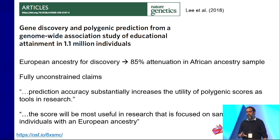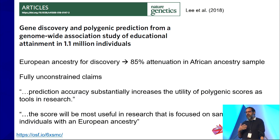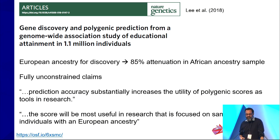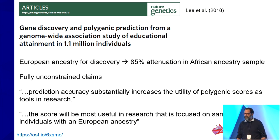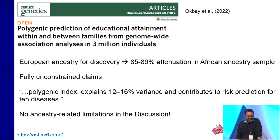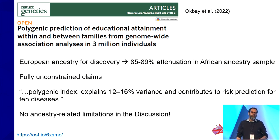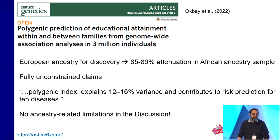Despite evidence in the paper that this was not a universal finding, they nevertheless held to universal claims. The question was: in the fourth iteration, did they change how they made their claims? Spoiler alert: they did not. Once again, over 3 million participants, European ancestry discovery sample, and a massive attenuation in predictability for the African ancestry sample. Once again, fully unconstrained claims throughout. And shockingly, this version had no discussion of the limitations either — actually a step backwards from the previous version.